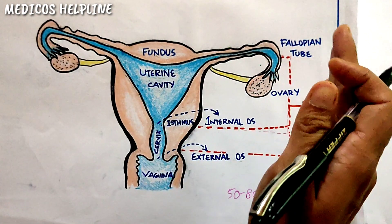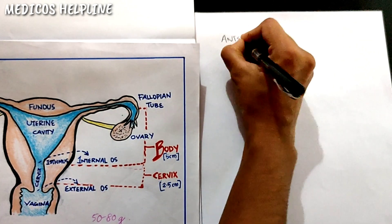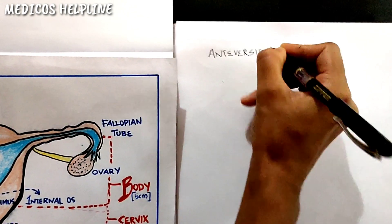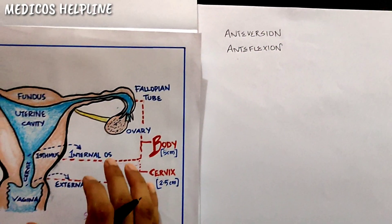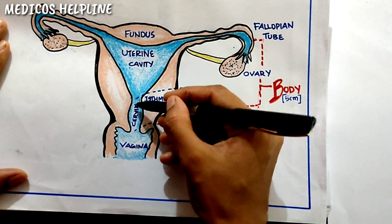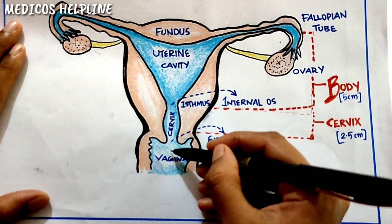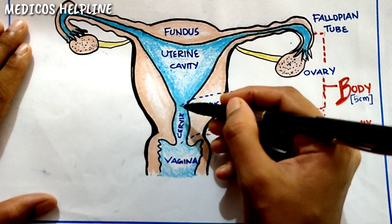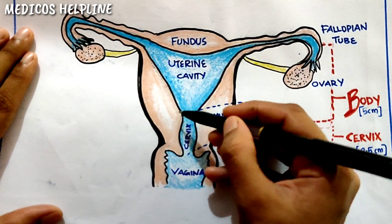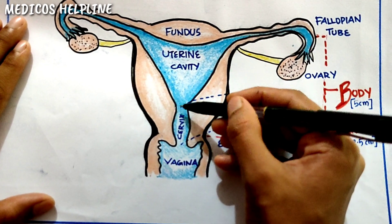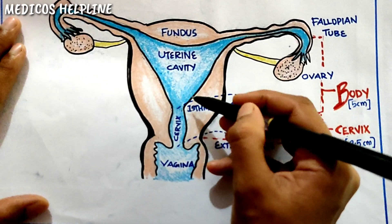The normal position of the uterus in the human body is anteversion and anteflexion. Anteversion means the angle between the long axis of the cervix and the long axis of the vagina, which is normally 90 degrees. Similarly, the angle between the long axis of the body and the long axis of the cervix is 120 degrees — this is called anteflexion. Hence, the normal position of the uterus is anteversion and anteflexion.